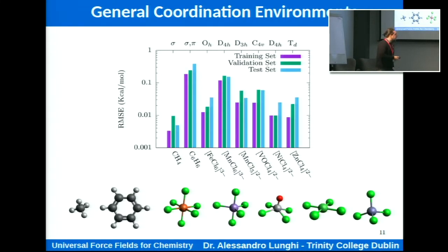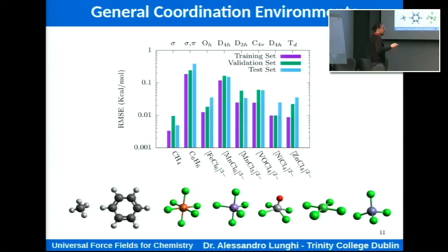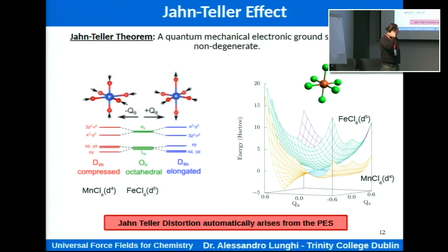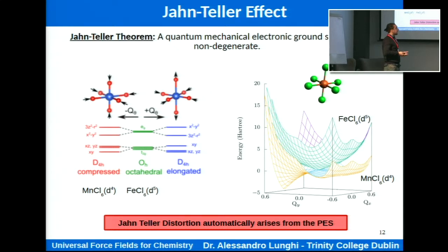We also tested this model on other toy systems to ensure it could describe all the most important environments encountered in transition metal chemistry. We also included two simple organic molecules to complete the picture, using the same exact prescription as before. The error is always small — always below 1 kcal/mol. It's also nice to see that this force field can reproduce fine features of the potential energy surface, like the Jahn-Teller distortion.